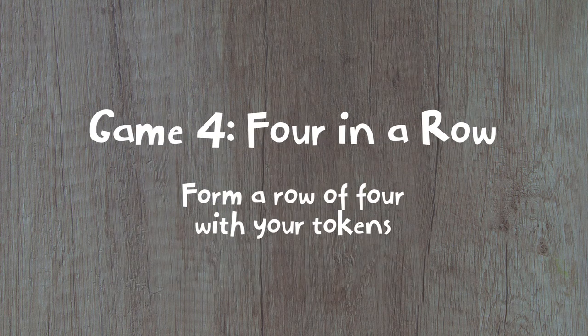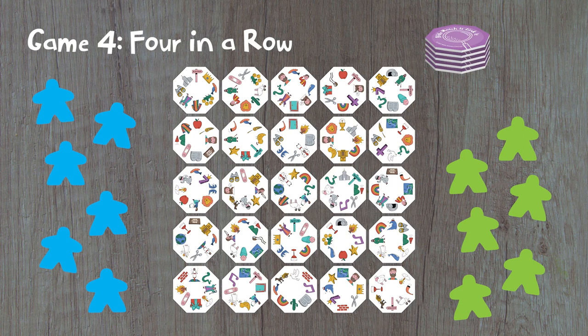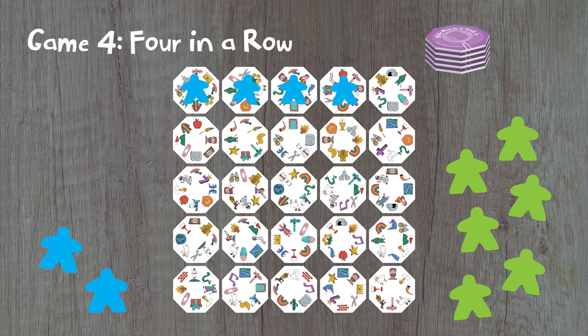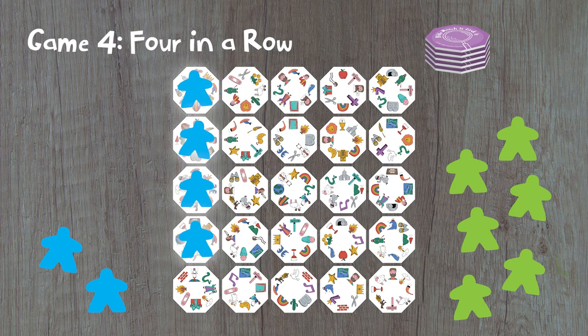In Four in a Row, each player is given six tokens of the same color, and tiles are arranged face up in a grid. Players win by connecting four of their tokens in a straight line, either horizontally, vertically, or diagonally.